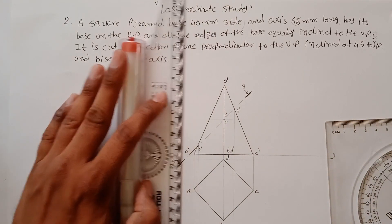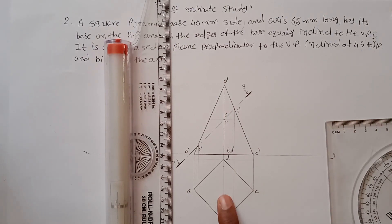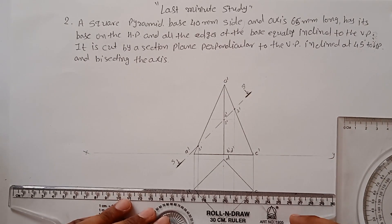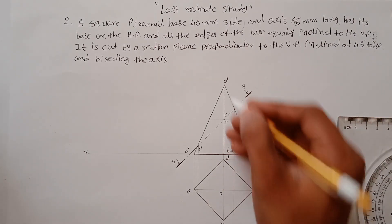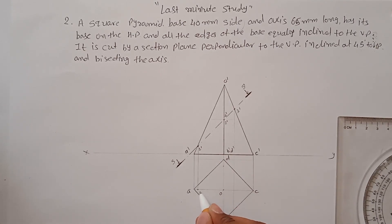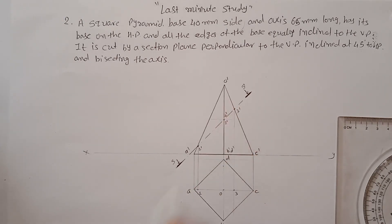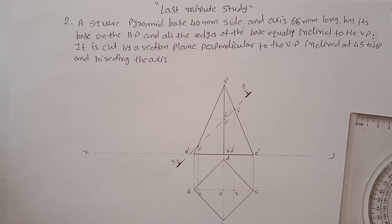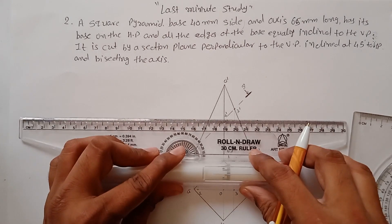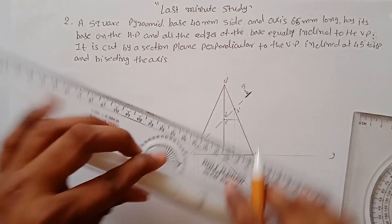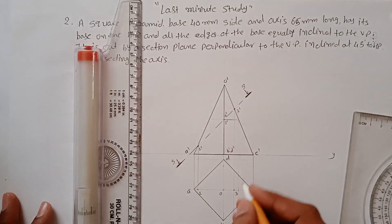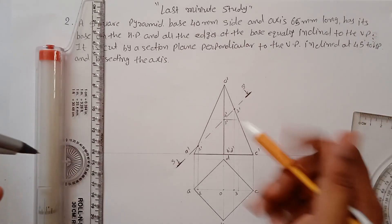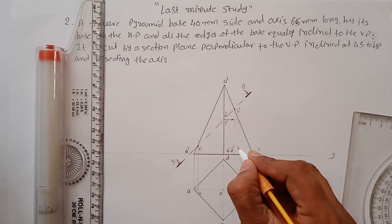Transfer the points to edges O-dash A-dash and O-dash C-dash. First draw the O point with a thin line. Point 1 is on edge OA and point 3 is on edge OC. To find points 2 and 4 on edges OB and OD, you cannot transfer directly — choose a generator or face. Transfer the section point in that direction to find the intersection on that line.